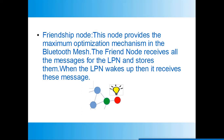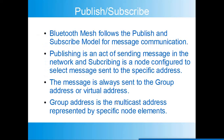The friend node provides the maximum optimization mechanism in Bluetooth mesh. The friend node receives all messages intended for the LPN and stores them. When the LPN wakes up, it polls the friend node, which then delivers the stored messages. The friend node also accepts data from the LPN node to distribute across the network.